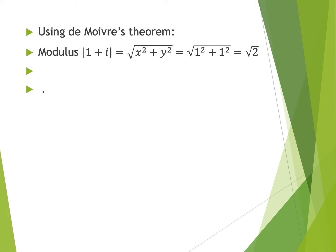First step: we have to find the modulus. For the complex number 1 + i, the modulus equals √(x² + y²). Since x = 1 and y = 1, after solving the square root, the modulus of the complex number 1 + i equals √2.